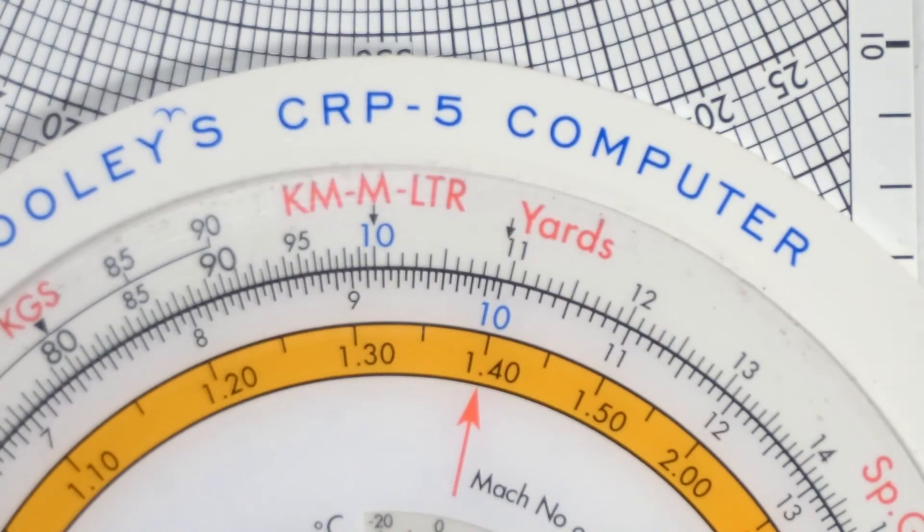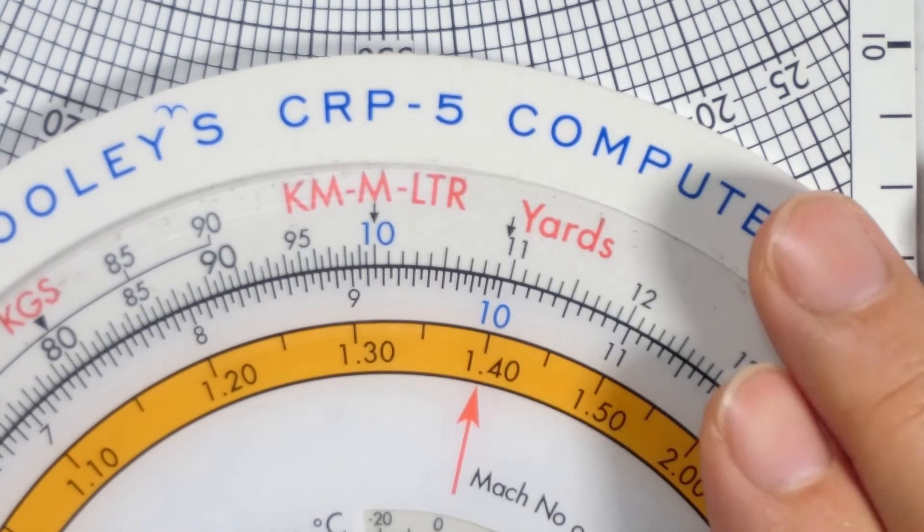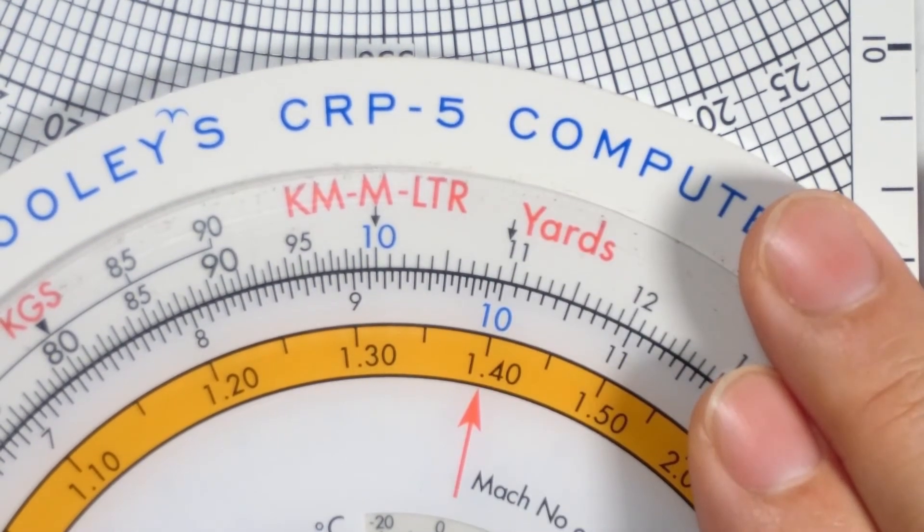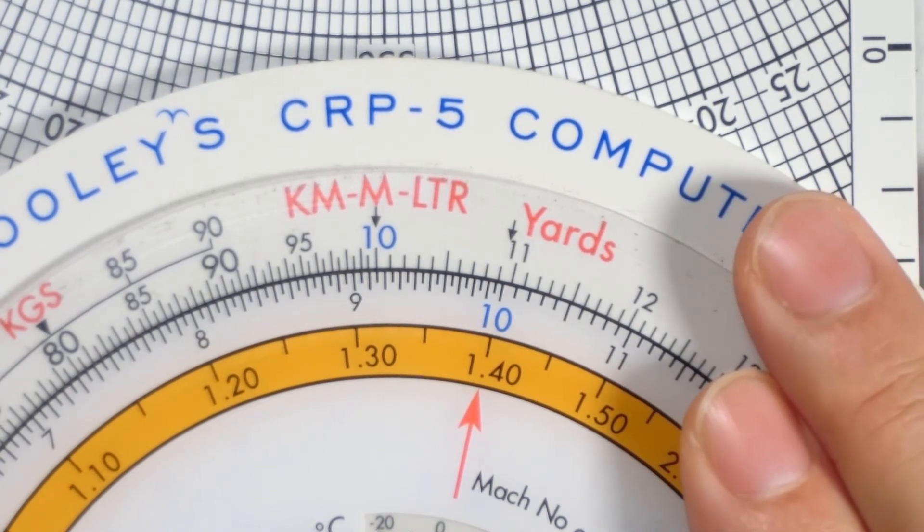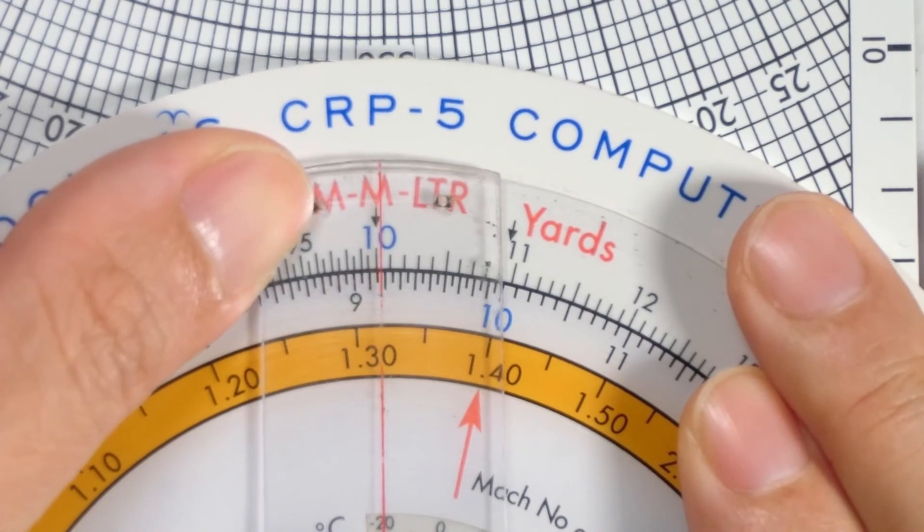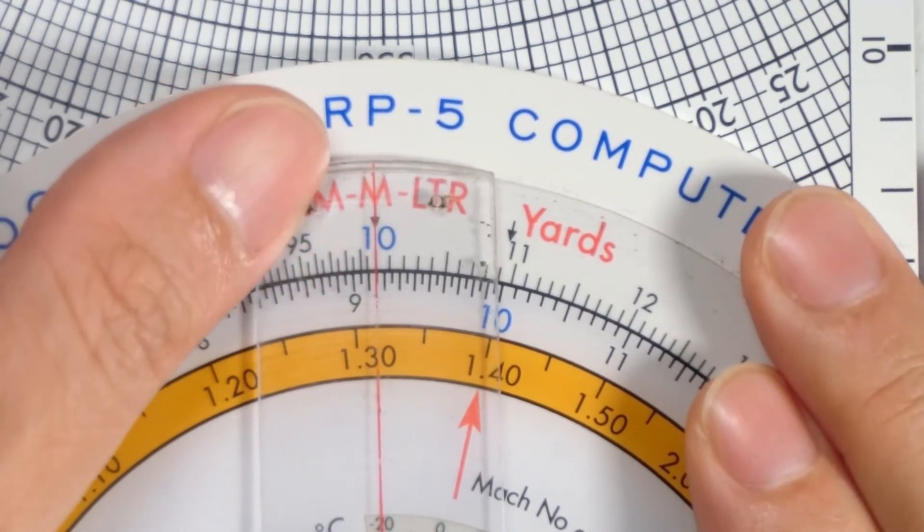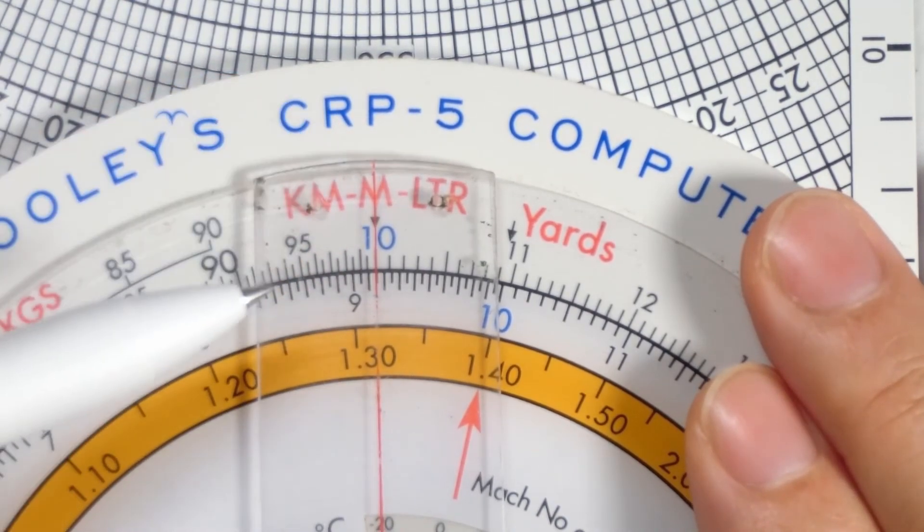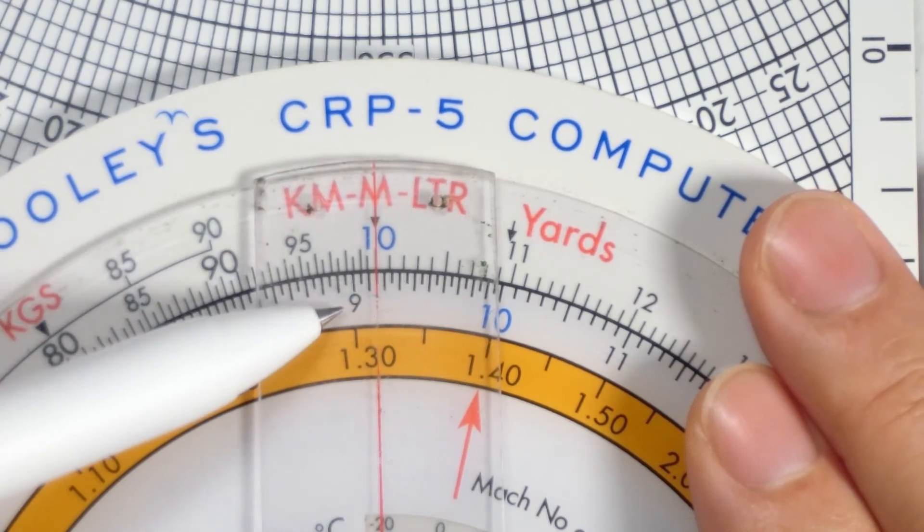And again I hold down the scale of the CRP so it doesn't move, and then I shift the cursor to the meters index or the meters pointer, and I can read off the meters on the inner scale.